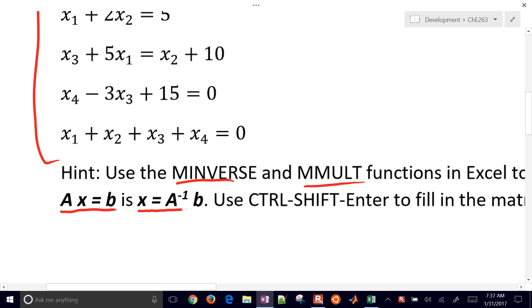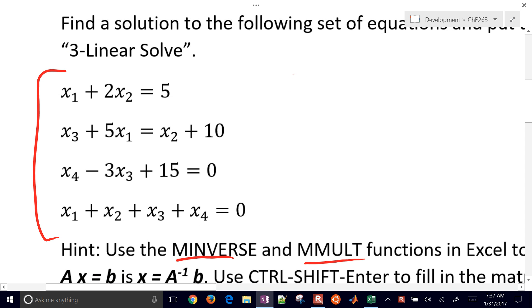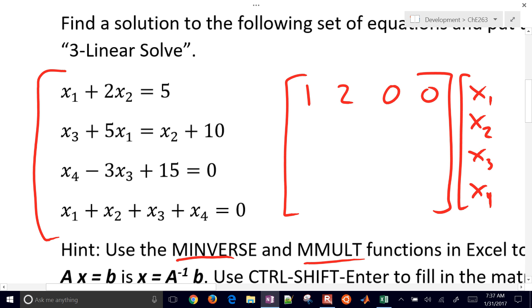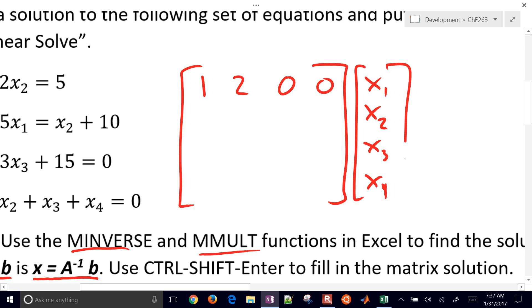And we'll do that by just doing the A inverse times B. So first of all, we just need to put this into an AX equals B form. So that's going to be X1, X2, X3, and X4. And I'm just going to put in the non-zero values here. I'll do one, two, and I have some zeros right here. And then this is going to be equal to the B vector right there. So there's our B, here's our A, and here's our X.